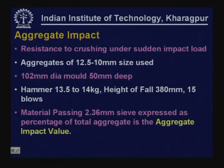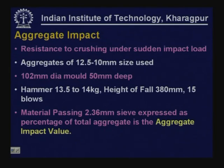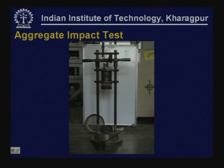The aggregate impact test measures resistance to crushing under sudden impact load. Aggregates of 12.5 to 10 mm size are packed into a 102 mm diameter mold 50 mm deep. A hammer of 13.5 to 14 kg is dropped from about 380 mm height for 15 blows. The material passing 2.36 mm sieve expressed as a percentage of total aggregate is the aggregate impact value.